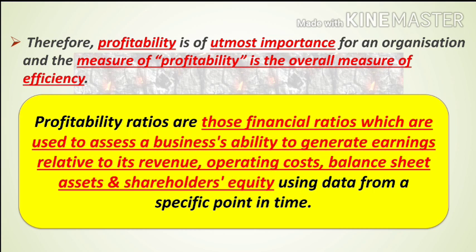So the definition is on the screen — let's read it once and then I'll explain. Profitability ratios are those financial ratios which are used to assess a business's ability to generate earnings, relative to its revenue, operating cost, balance sheet assets, and shareholders' equity, using data from a specific point in time. So guys, profitability ratios are those financial ratios through which you can find out a business's earning ability, by comparing revenues, operating cost, balance sheet assets, and shareholders' equity. All those financial ratios through which you judge a company's profitability and earning capacity are called profitability ratios.